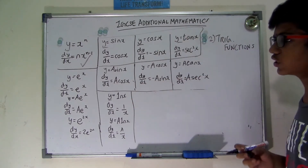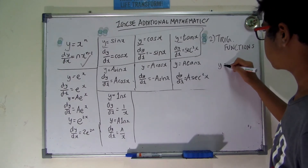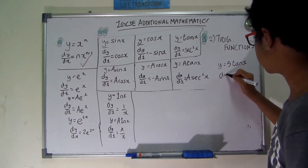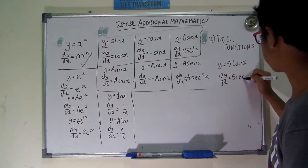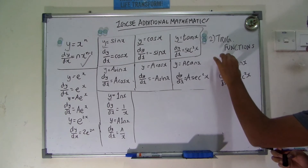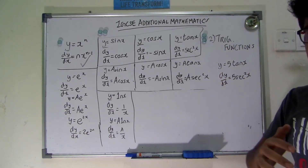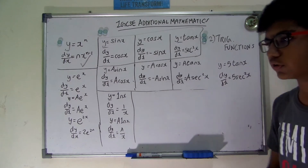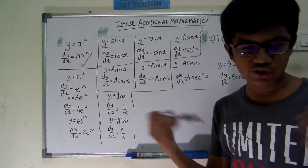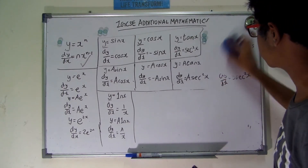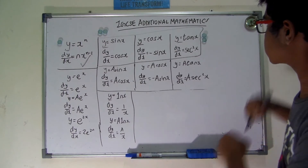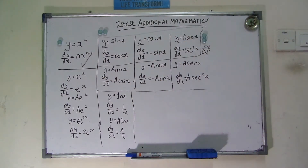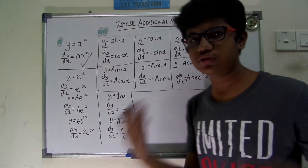If a number comes before the trigonometric function, such as y equals 5 tan x, then dy/dx equals 5 sec²x — you simply copy the coefficient down. If the integer is in front of the entire function, just copy it into the differentiated result. This will be proved through differentiation laws like the chain rule.